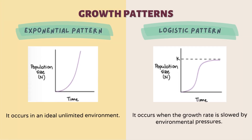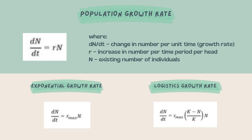There are two other growth patterns that may occur depending on environmental conditions: the exponential or J-shaped growth pattern and the logistic sigmoidal or S-shaped growth pattern. The exponential growth pattern occurs in an ideal unlimited environment, while the logistic or sigmoidal growth pattern occurs when the growth rate is slowed by environmental pressures. Population growth rate is the change in number per unit time, equal to the product of the existing population size N and the innate capacity of increase of the population R. Exponential growth rates don't change even if the population grows larger, while the logistic growth rate gets smaller as the population approaches its maximum capacity.